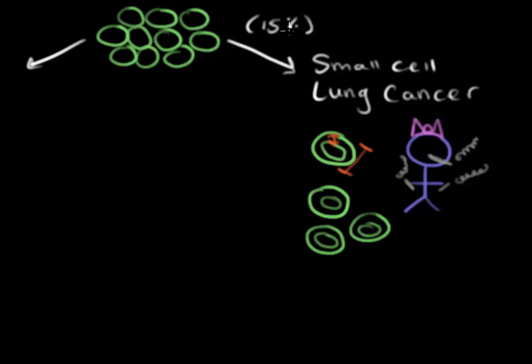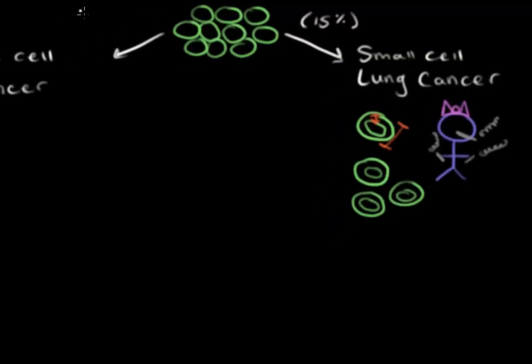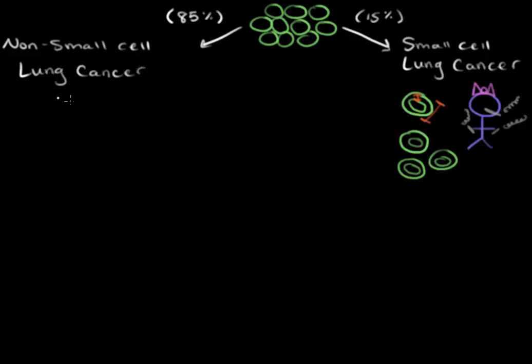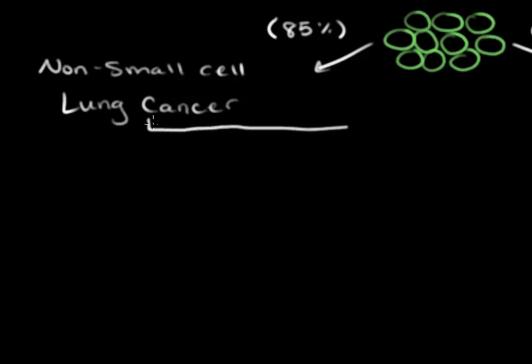But what about the other 85%? 85% of the time, it's a non-small cell lung cancer diagnosis. Now, these are big mature cells, and there's lots of mature cells in the respiratory tract. So this category has subcategories depending on which type of mature cell has become cancerous.